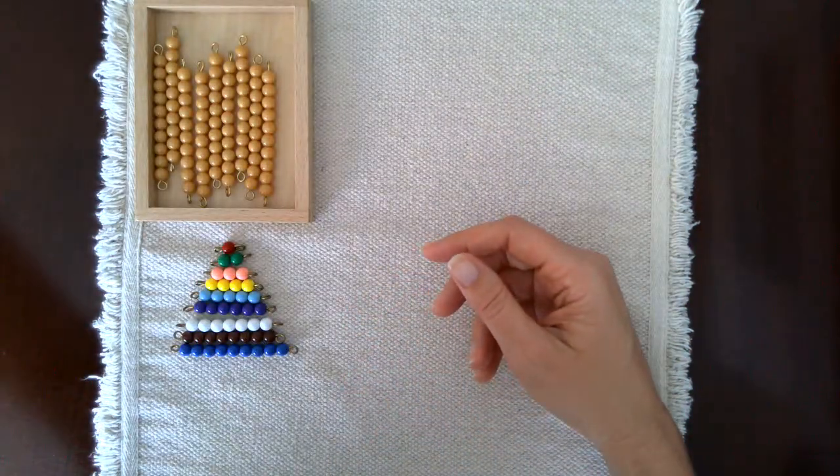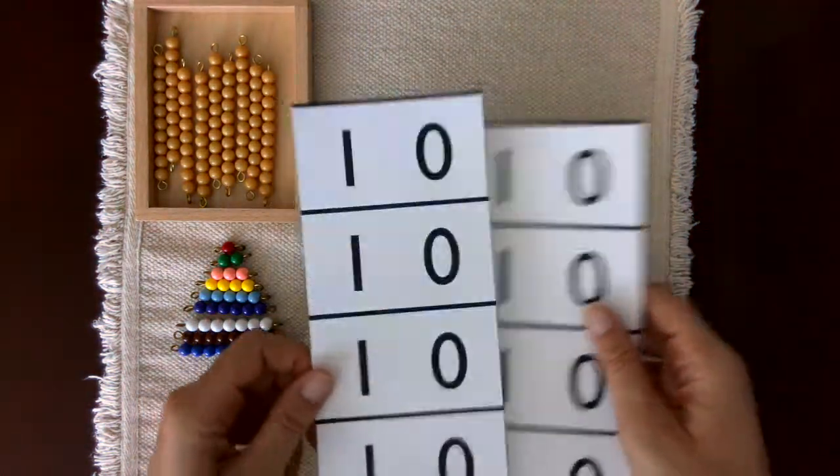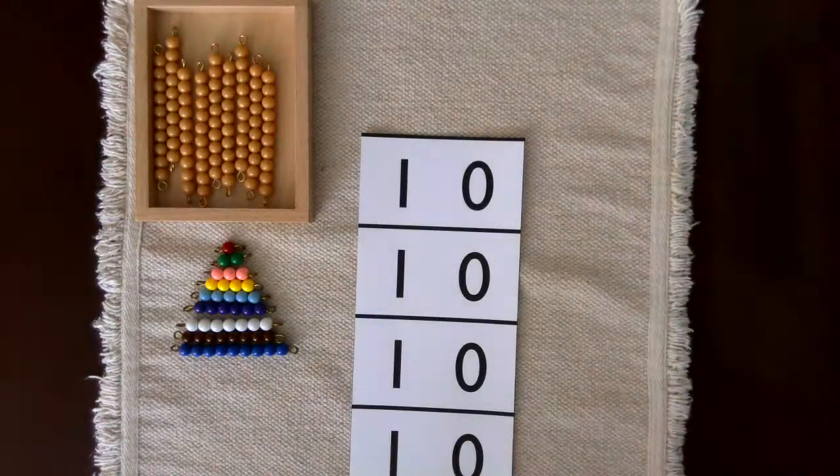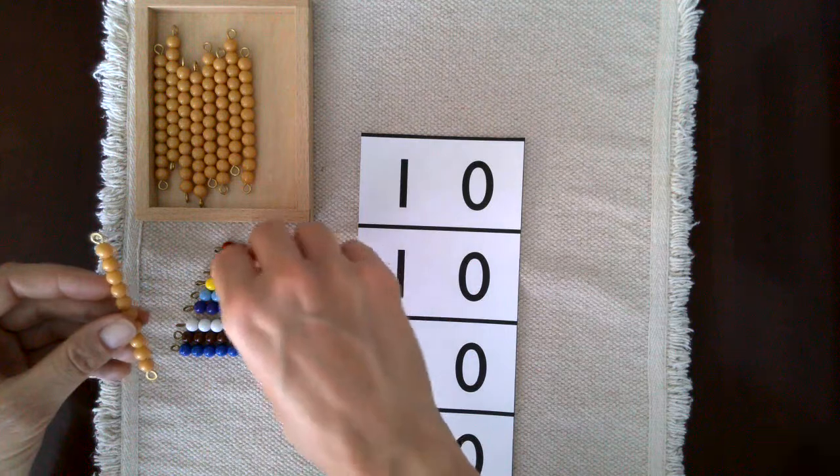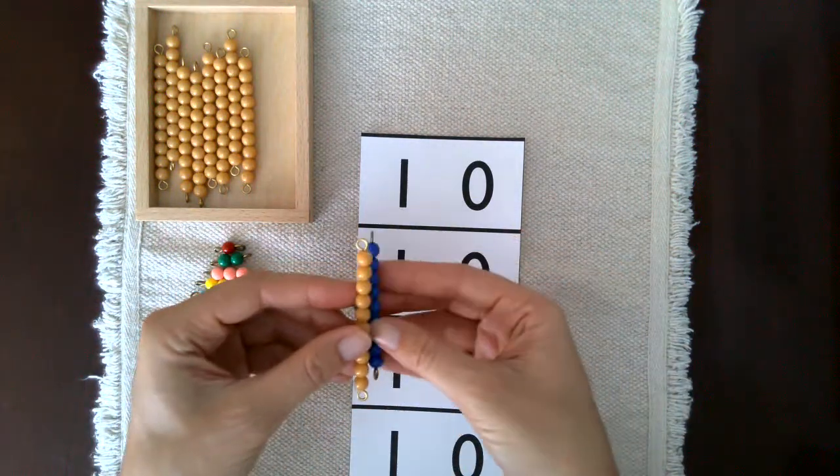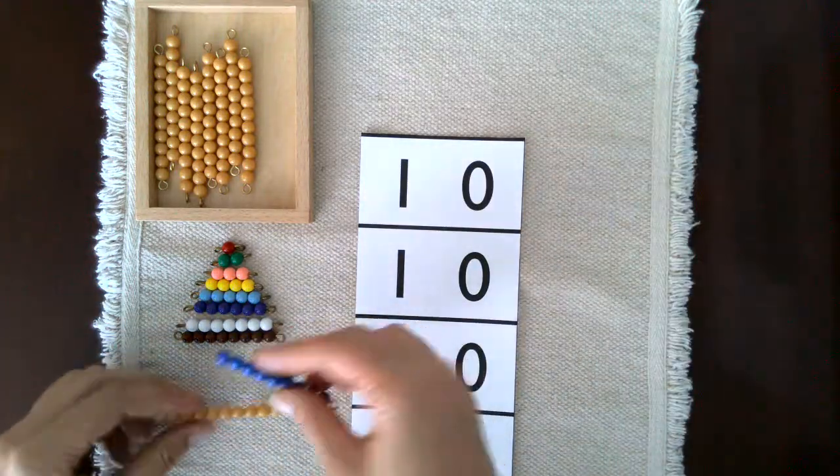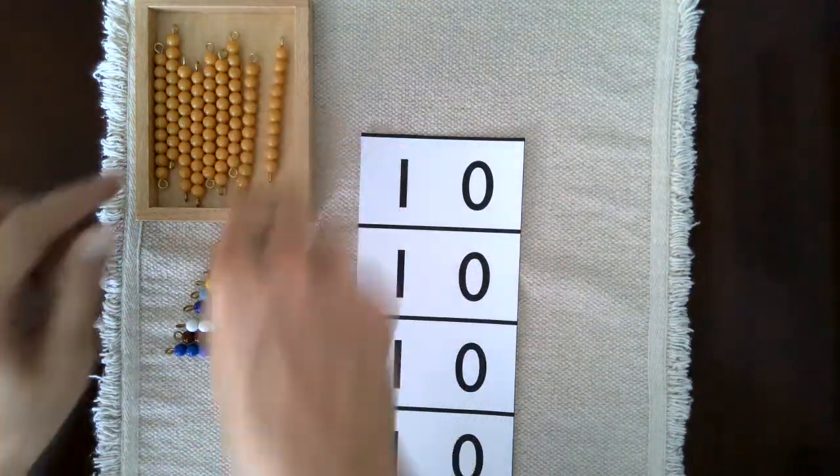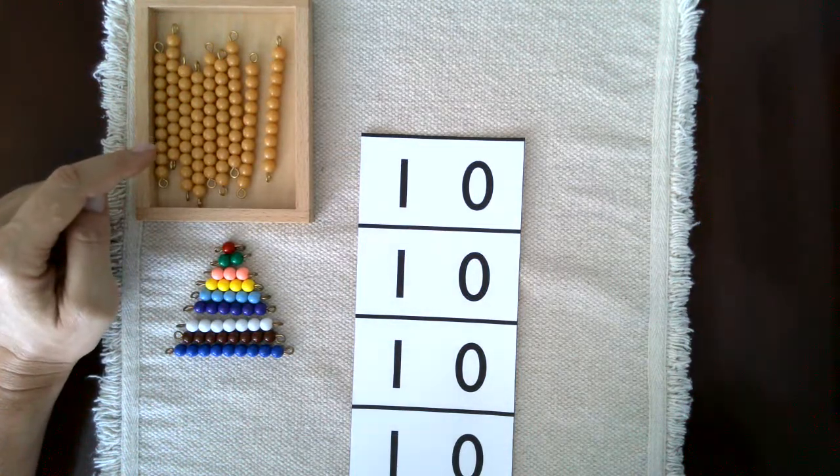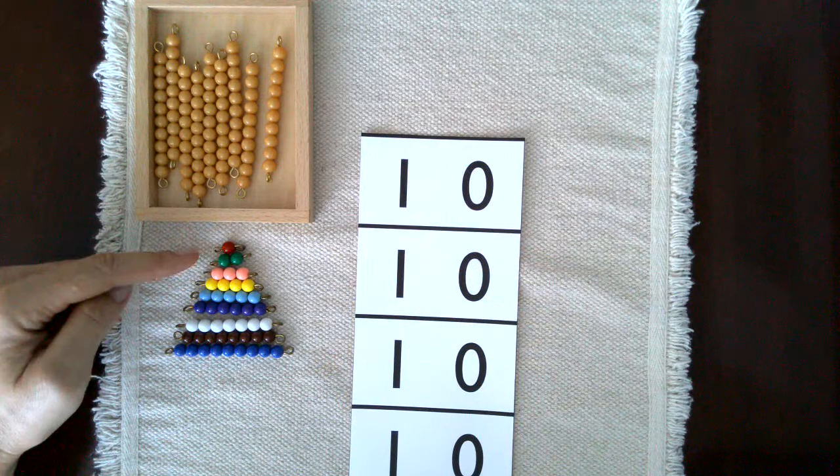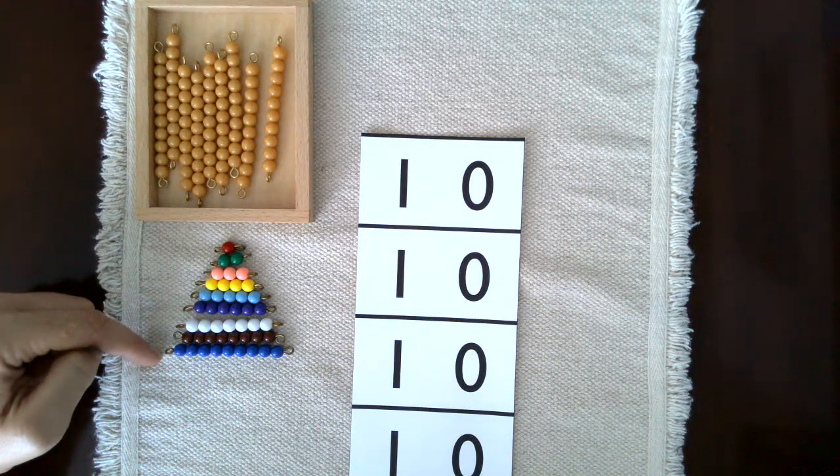That's the wrong one, the teen board, okay. I'm going to be using a smaller version for this lesson. Typically you'd want to build the numbers so that they are vertical, but just to keep it in the frame I'm going to be building them horizontally. You'll need nine golden beads or base 10 blocks can also be used, and the colored bead bars one through nine.